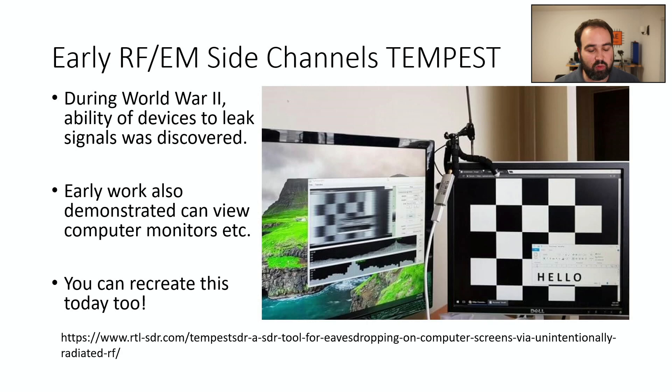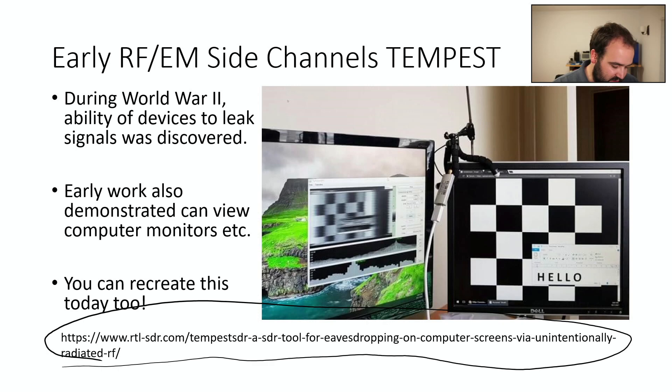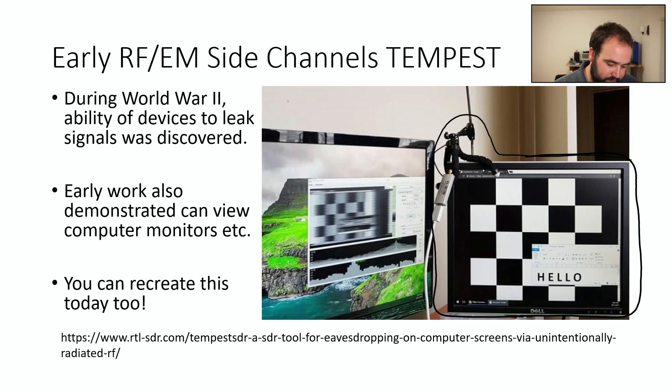You can even use this to kind of view monitors. So this was actually shown quite a while ago with Cathode Ray Tube, the old style monitors. But you can do it with new ones too. So there's even a cool example here using these really low-cost software-defined radios. So you can actually do some pretty cool stuff if you want to play with this. And you can see in this photo here, there's an antenna, it's pretty near, but there's a display here, and you can actually view the display. And so that's what's being recovered just through the emissions of it.